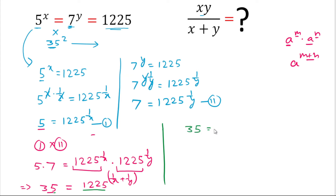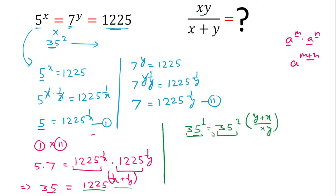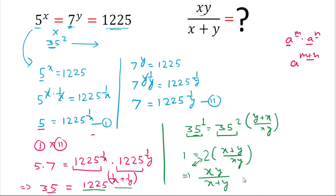We rewrite 1/x + 1/y with LCM xy as (x + y) / xy. So 35 equals 35 squared times (x + y)/xy, which is 35^(2(x+y)/xy). Writing 35 as 35^1 and equating powers: 1 equals 2(x + y) / xy. Cross-multiplying gives xy / (x + y) equals 2. This is our answer.